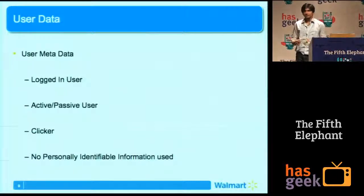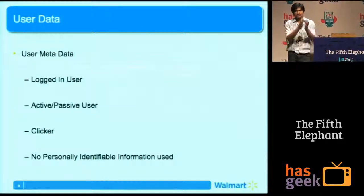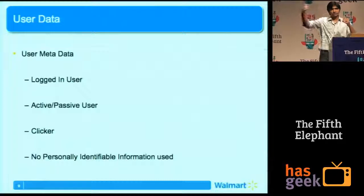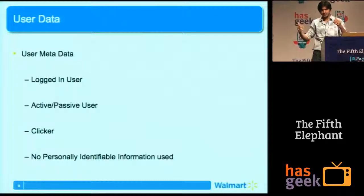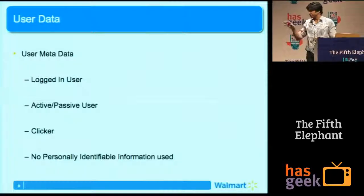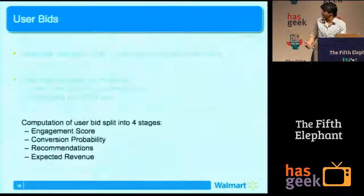One thing to point out is we do not use any personally identifiable information. We have a user ID — say X, Y, Z — and we know what that person did, but we cannot identify who this person is in real life. We just use a user ID, and for that user ID we build our models.